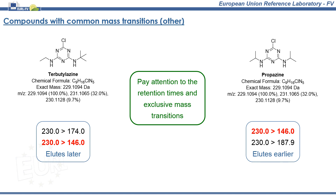Despite being constitutional isomers, fortunately there is one mass transition exclusive to terbutylazine and another one for propazine. Nevertheless, make sure to pay attention to the 230 to 146 mass transition and retention times.